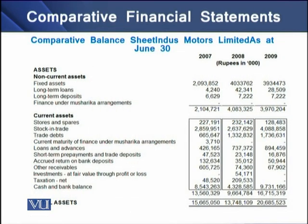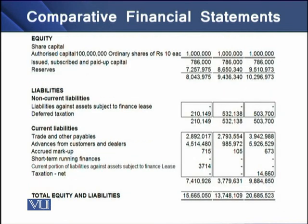On the screen you can see a comparative balance sheet from the period 2007 to 2009. Over this three-year period you can see the changes in assets of the company — the change in fixed assets, long term loans, and likewise the changes in store and spare, stock and trades, and even cash and bank balances from 2007 to 2009.